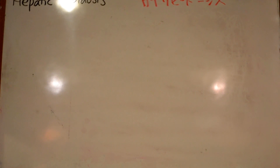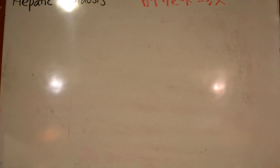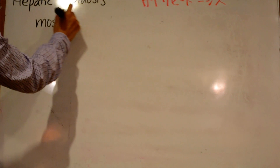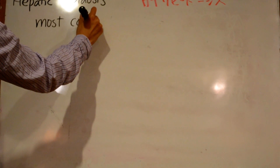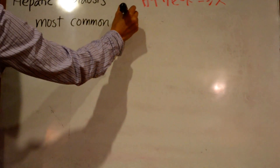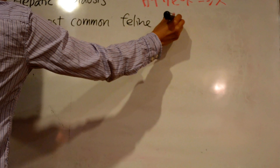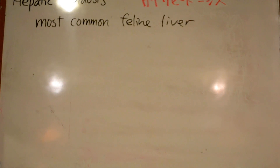Today's review is about hepatic lipidosis. Hepatic lipidosis is the most common disorder of the feline liver. It often occurs in fat cats that stop eating.